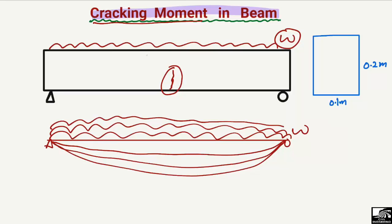The crack occurs in the tension portion of the beam because at the top we have compression, where concrete is strong. At the bottom portion we have tension, but concrete is weak in tension, so the crack always starts to occur in the tension portion of the beam.